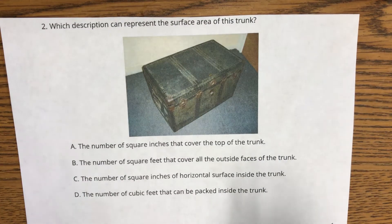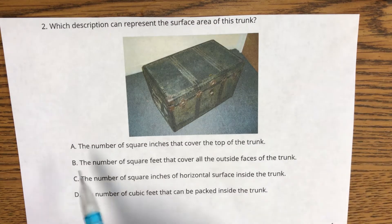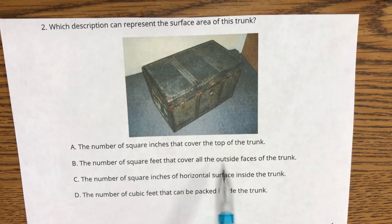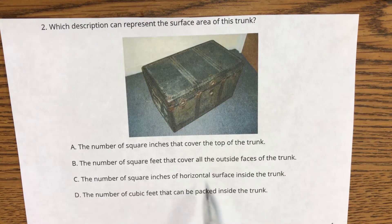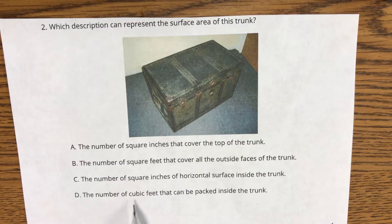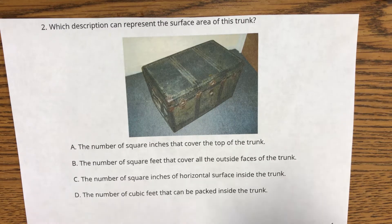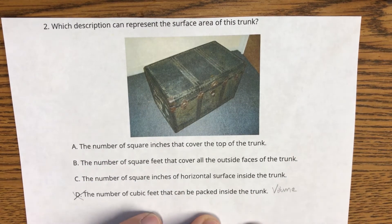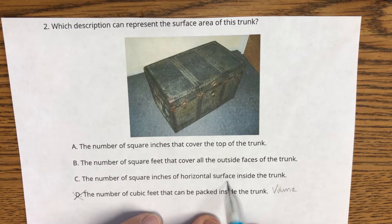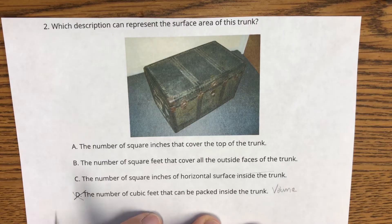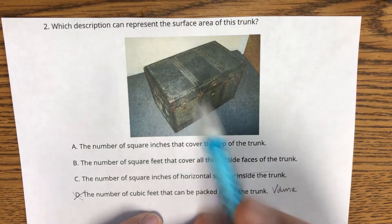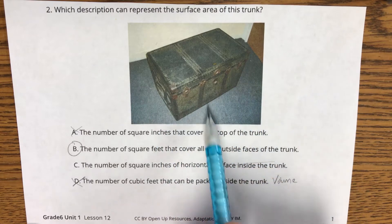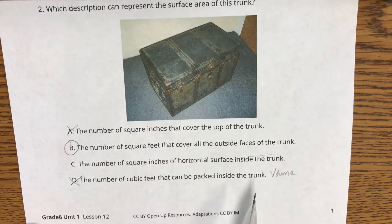As we look at question two, which description can represent the surface area of this trunk? A, the number of square inches that cover the top of the trunk. B, the number of square feet that cover all the outside faces of the trunk. C, the number of square inches of horizontal surface inside the trunk. Or D, the number of cubic feet that can be packed inside the trunk. Well, D is volume. So it's not D. We're really not dealing with inside the trunk right now. And A was just the top of the trunk. Well, surface area is more than that. Surface area is the number of square feet that cover all the outside faces of the trunk. So that's question two.